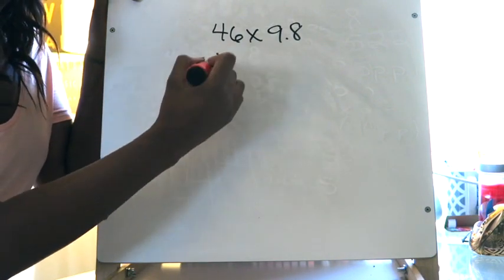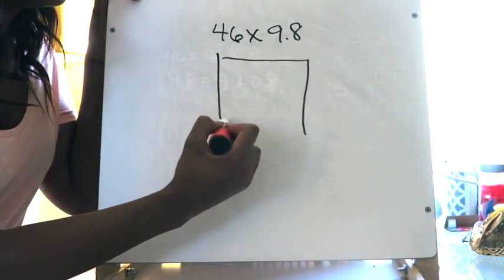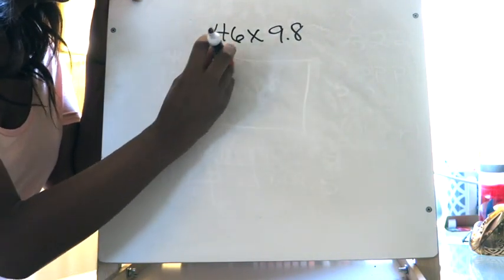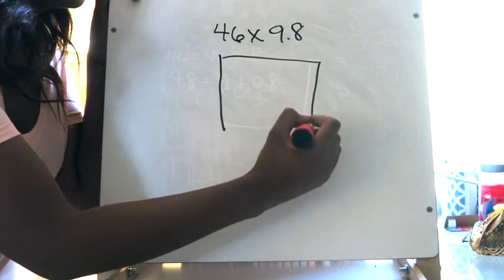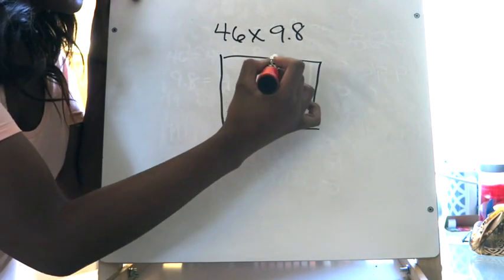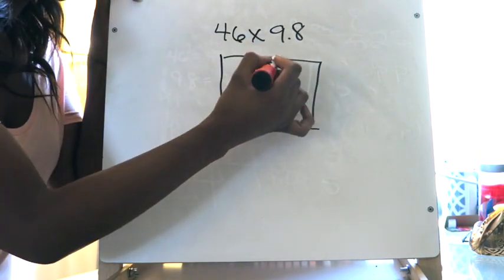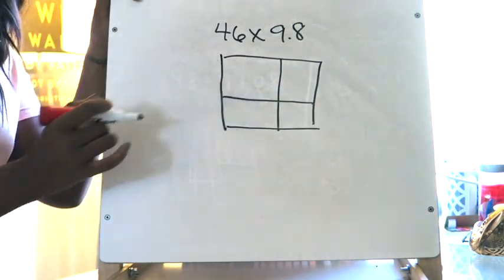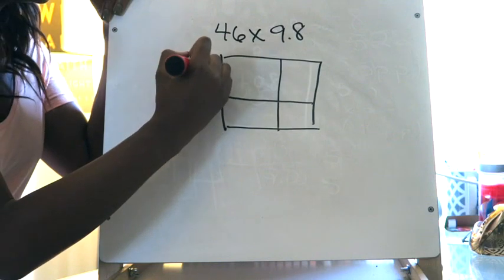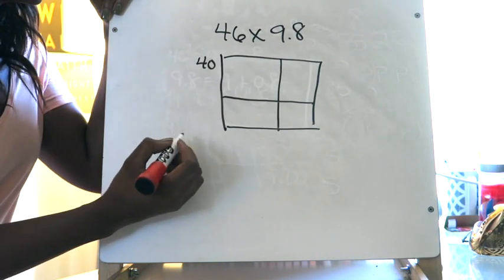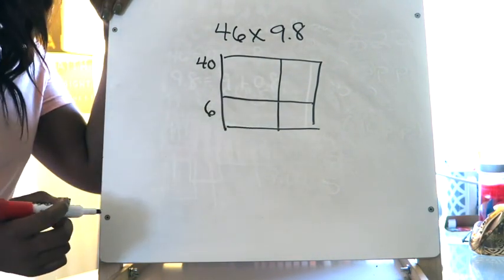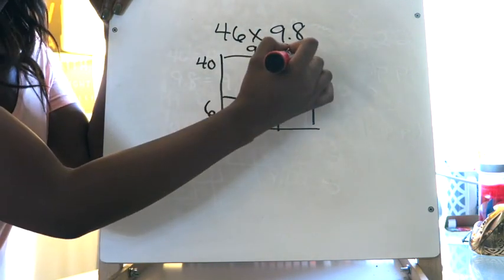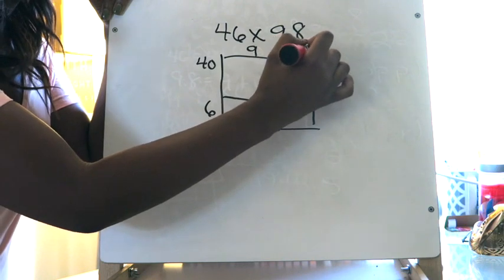Your diagram is always going to be in the shape of a square and you want to set it up proportionally. Since I'm dealing with the whole number 46, that's going to take up the bulk of the diagram. On one side I'm going to write the 40 and the 6 from 46. Up top I'm going to write the 9 from 9 and 8 tenths, and over here I'm going to write the 8 tenths.